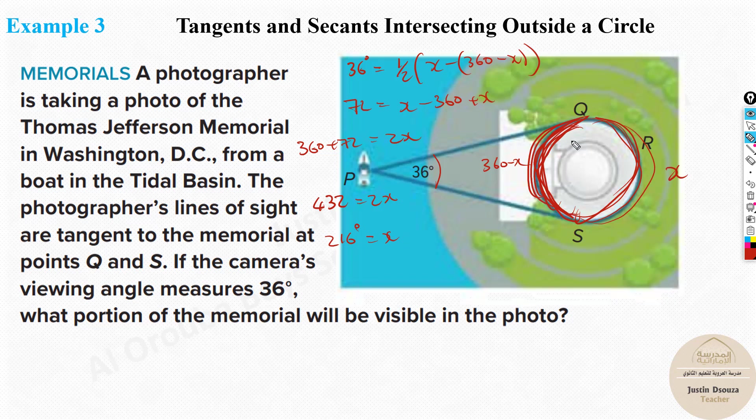So this part, whatever is, sorry, the X, this part, whatever is not visible is 216. So what is basically the visible part? That is 360 degrees minus X, that is 216. So what will happen is this X we found out to be 216. So 360 minus 216 is the answer. So it will be basically 144 degrees. So this is the part that is visible, 144 degrees.